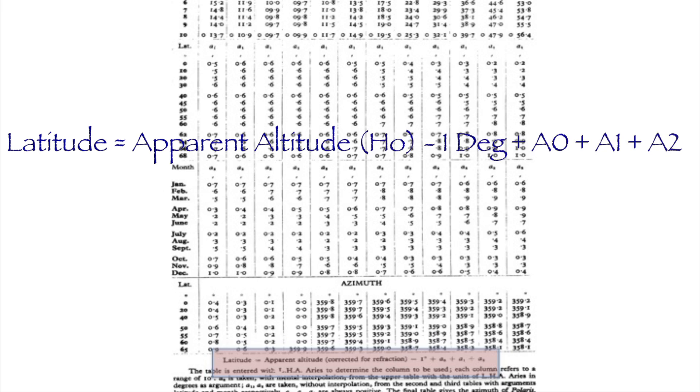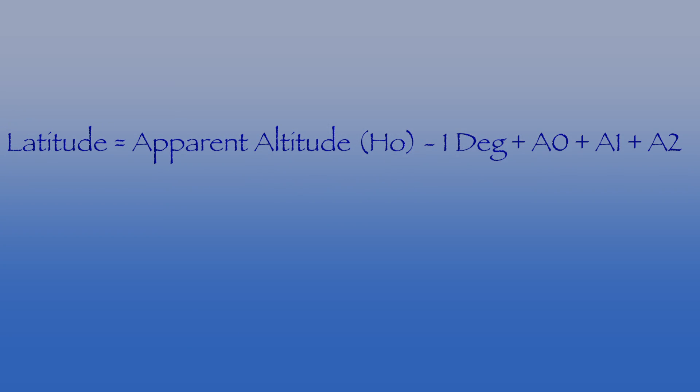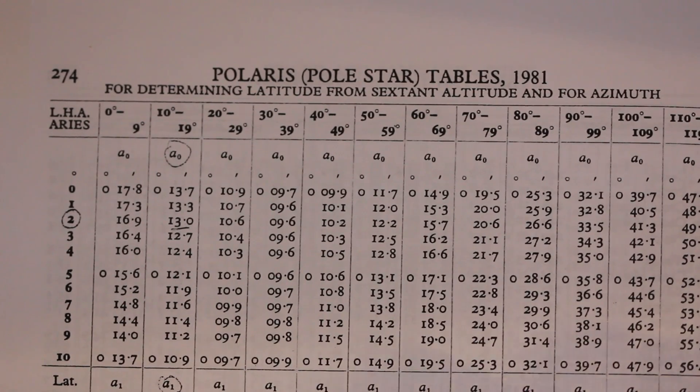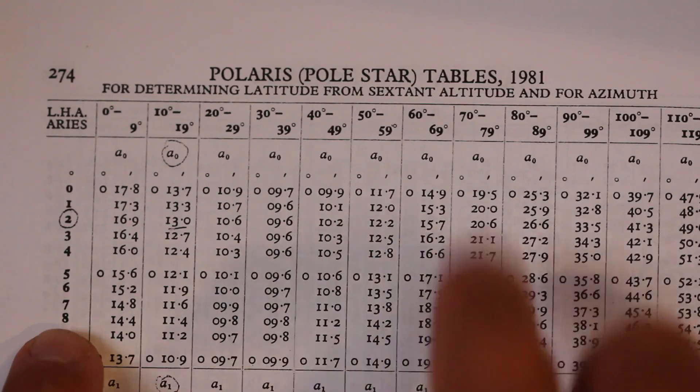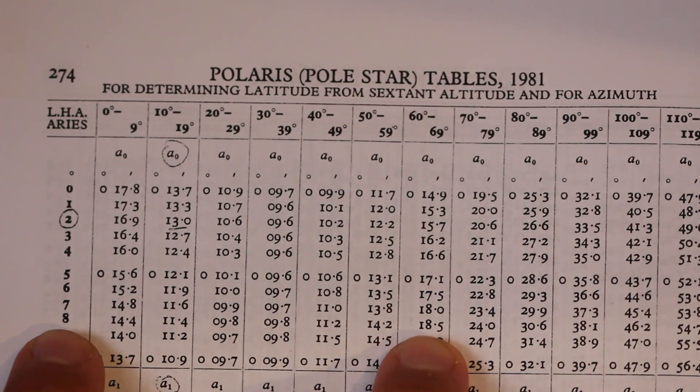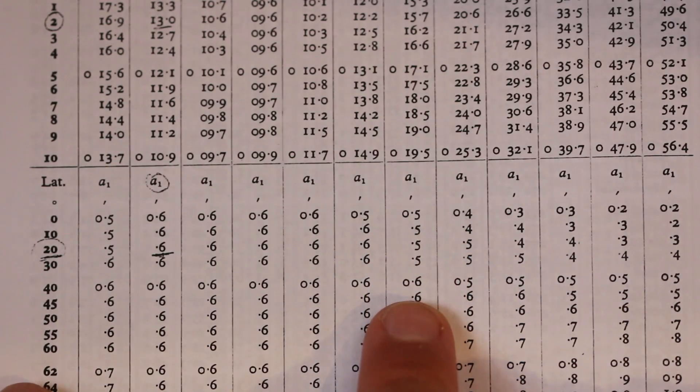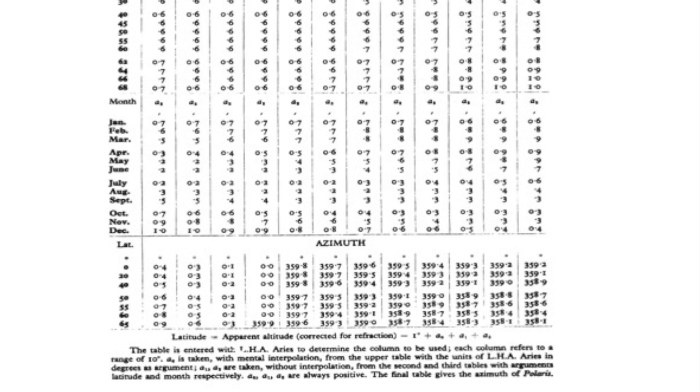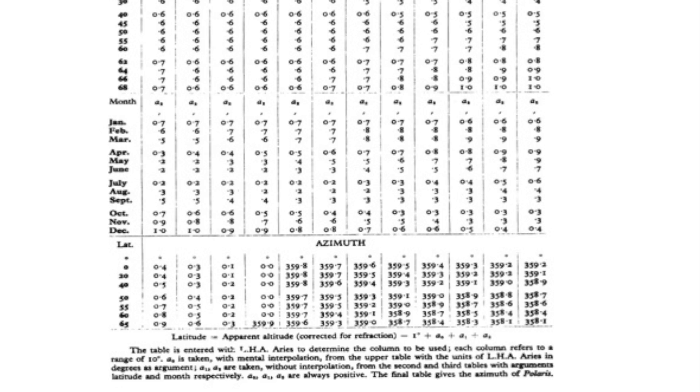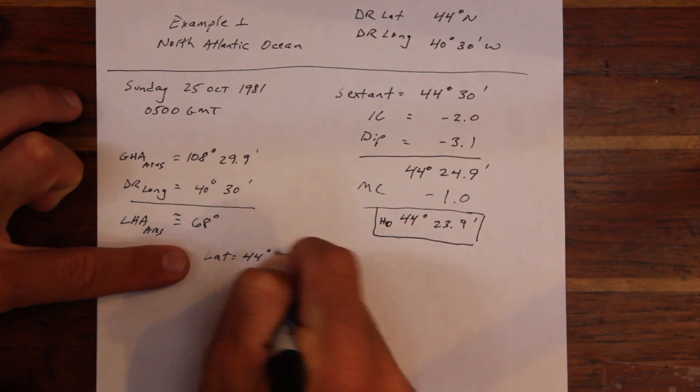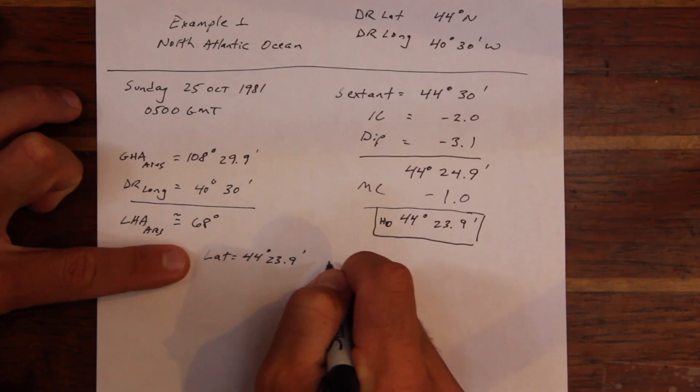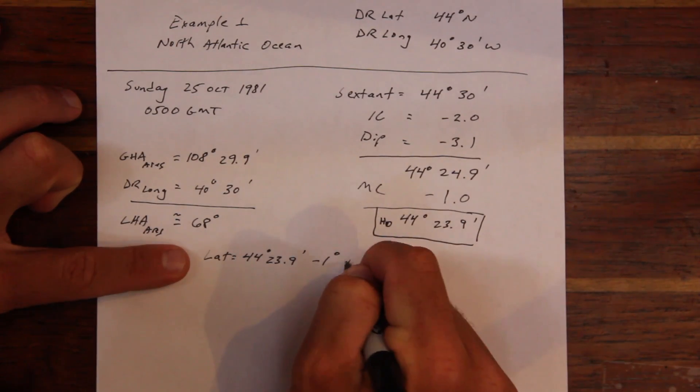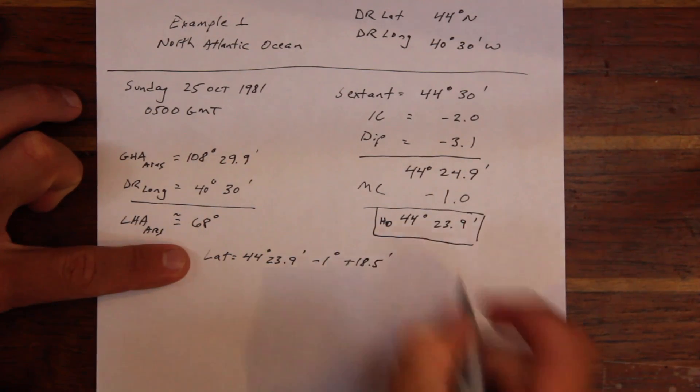The formula for determining latitude by Polaris is listed at the bottom of the Polaris tables, and it involves three corrections, labeled A0, A1, and A2. The A0 correction is taken from the LHA of Aries, the A1 correction is given for the approximate latitude, and the A2 correction is based on the month of observation. All these corrections have to do with the location of Polaris in the sky. After that, it's simply a matter of applying the corrections to the observed altitude to determine your latitude.